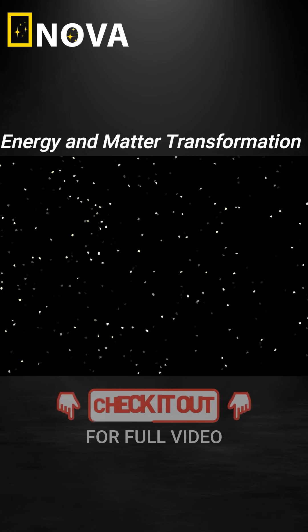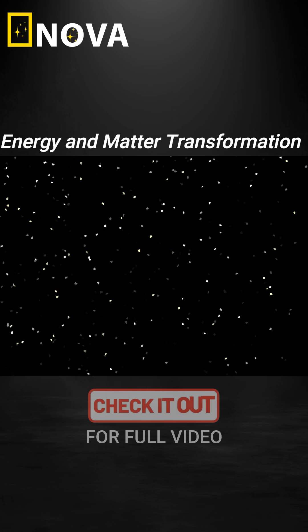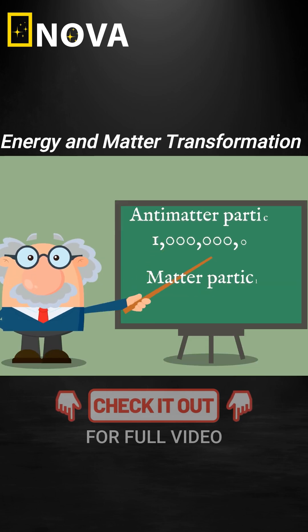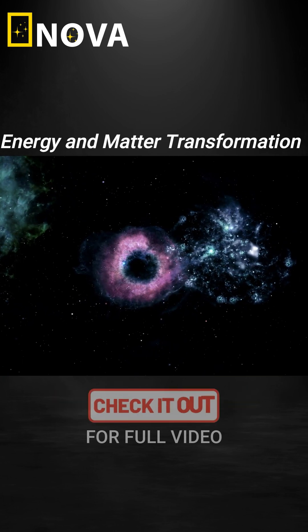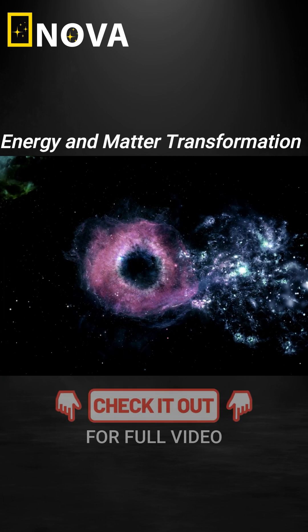So how did anything survive? Luckily, there was a tiny imbalance. For every billion antimatter particles, there were one billion and one matter particles. This small excess of matter is what formed all the stars, planets and galaxies in the universe.